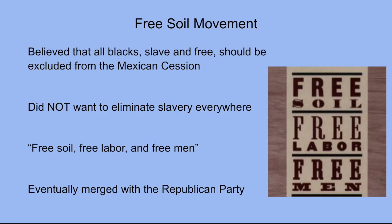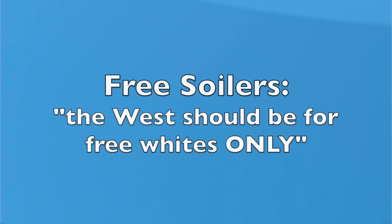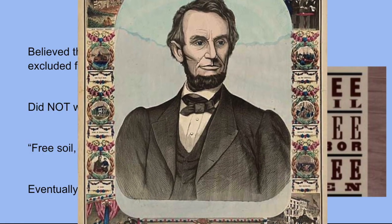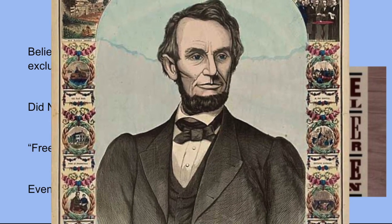The Free Soil Movement: Northern Democrats and Whigs supported the Wilmot Proviso and the position that all blacks, slave and free, should be excluded from the Mexican cession. In the North, anti-slavery forces and racists alike could find common ground in their support for the Free Soil position. Unlike the abolitionists, who insisted on eliminating slavery everywhere, the Free Soilers did not demand the end of slavery where it already existed. Instead, they sought to keep the West a land of opportunity for whites only, so that the white majority would not have to compete with the labor of slaves or free blacks. In the 1840s and 50s, Abraham Lincoln was a Free Soiler as well, and he would later, of course, become an abolitionist.